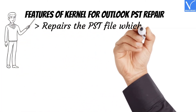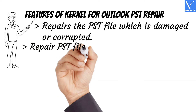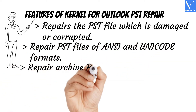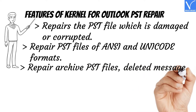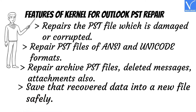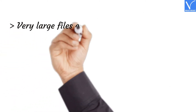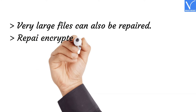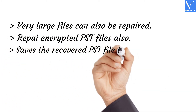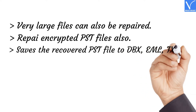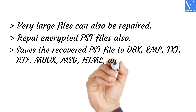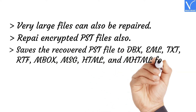Features of Kernel for Outlook PST Repair: Repairs PST files which are damaged or corrupted. Repairs PST files of ANSI and Unicode formats. Repairs archive PST files, deleted messages, and attachments. Saves recovered data into a new file safely. Very large files can also be repaired. Repairs encrypted PST files. Saves the recovered PST file to DBX, EML, TXT, RTF, MBOX, MSG, HTML, and MHTML formats.